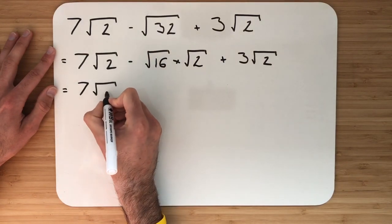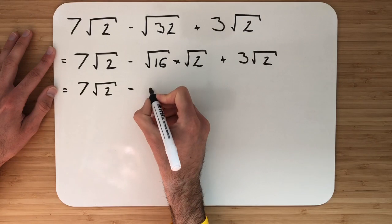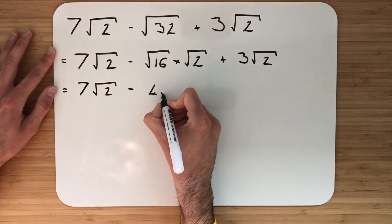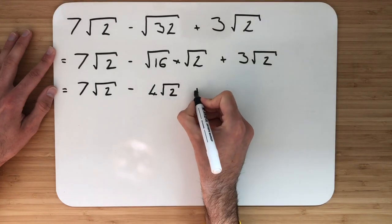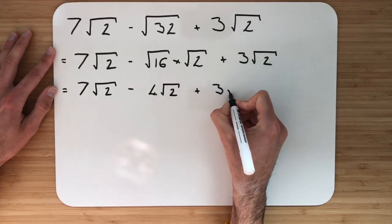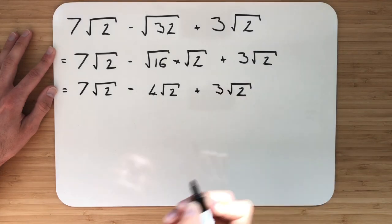So we have 7√2, subtract 4√2, the square root of 16 is 4. And then I'm going to add on 3√2.